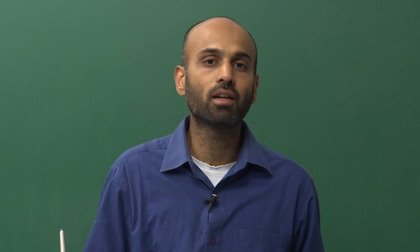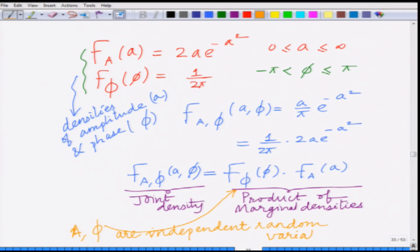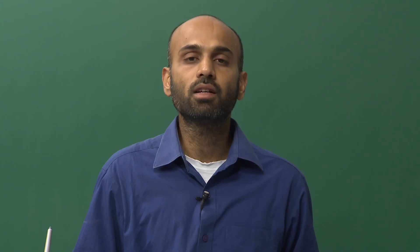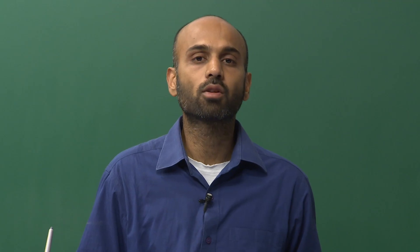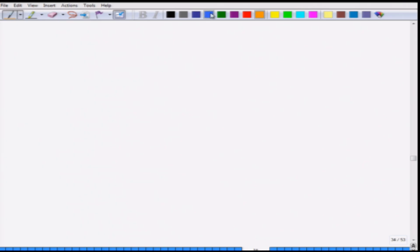The amplitude and phase of the Rayleigh fading channel are independent random variables — A and φ are independent. These densities can be used to derive very valuable properties of the fading channel. Let us look at the following example to understand this better.